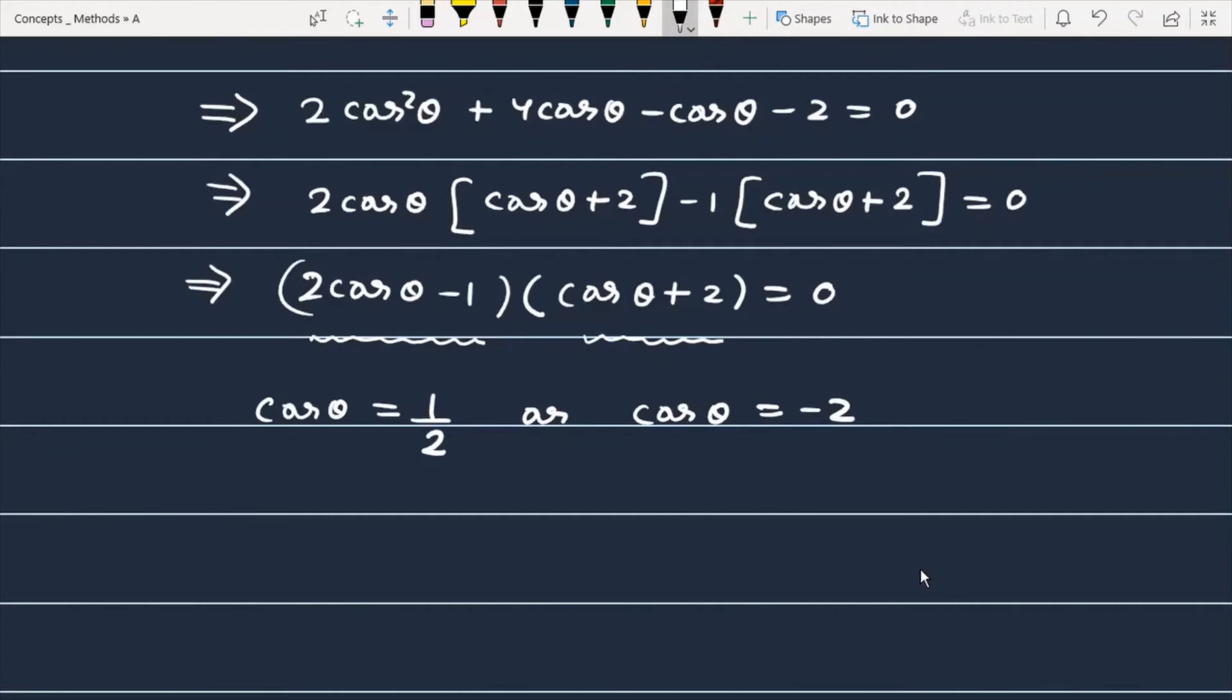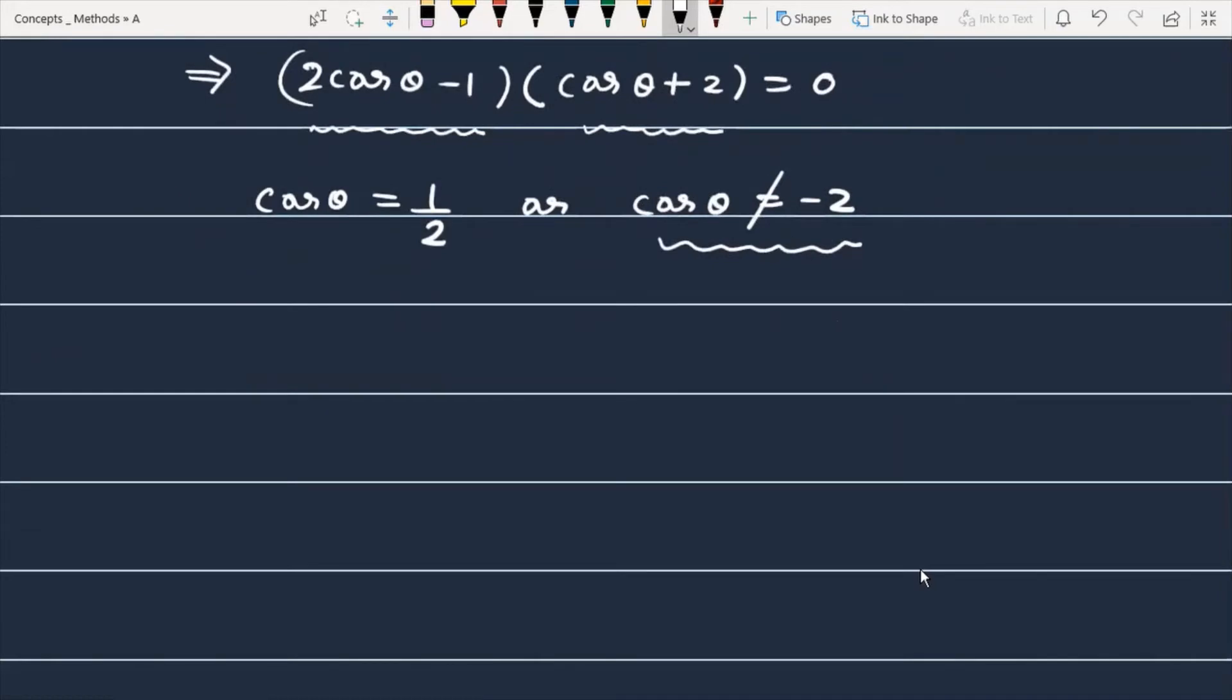Now, as you know that cosθ of the range is between minus 1 and 1, that means cosθ is not bigger than 1 or smaller than minus 1. That means cosθ equals 1/2.